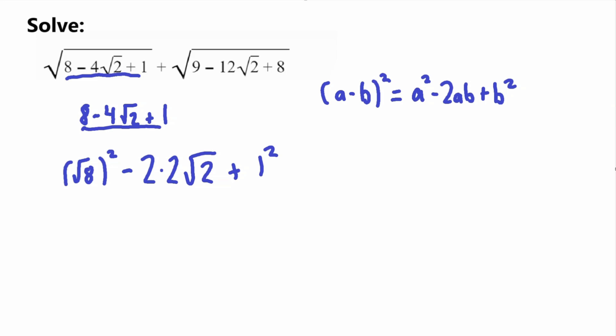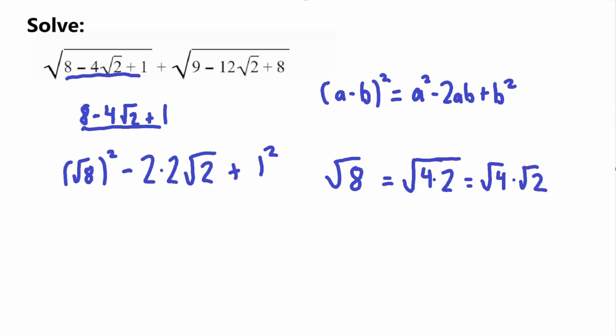How can we change this up? Let's take square root of 8. Can we rewrite it? Yes, we can. Whenever you have a square root like this, you can find factors inside. Since 8 equals 4 times 2, we can break this into square root of 4 times square root of 2. Square root of 4 is a perfect square — it's just 2 — so square root of 8 equals 2 times square root of 2.